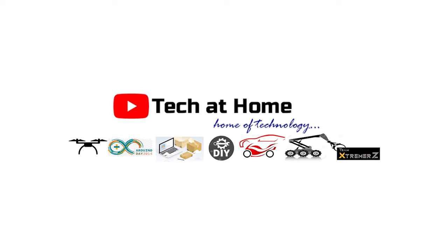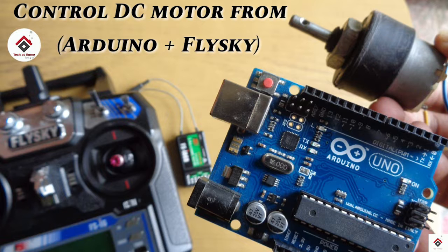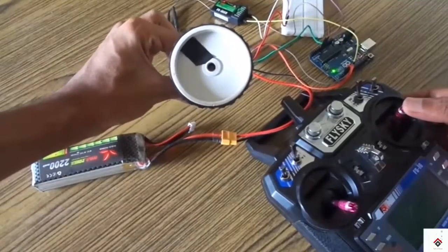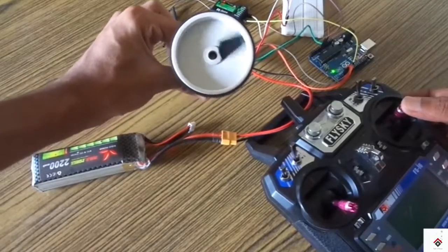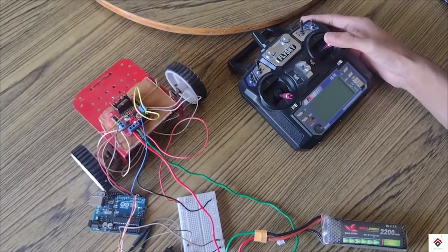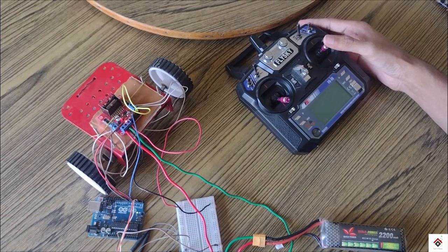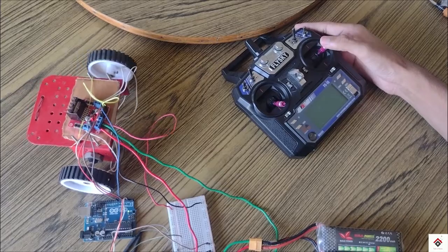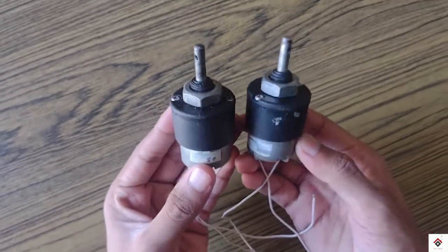Hello guys, welcome back to another video. Previously I have shown how you can control a DC motor using Flysky and Arduino board. So today we'll be making a robot using Flysky, Arduino, and motor driver with two motors. I'm using two 12-volt DC motors.